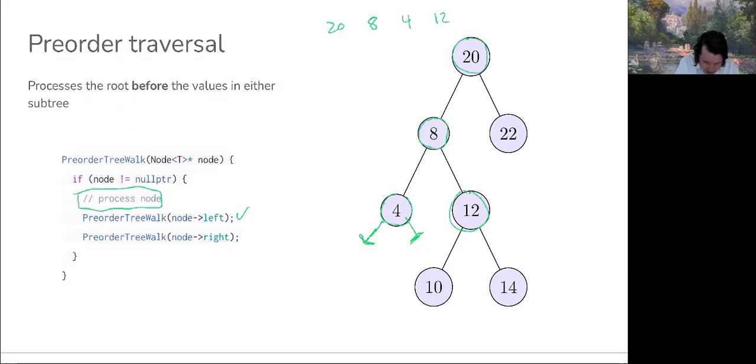Now we need to process left of 12. So that's going to be 10. And then notice that we're at a leaf again, so there's no more processing to be done here.